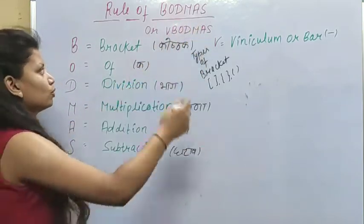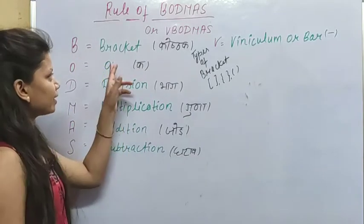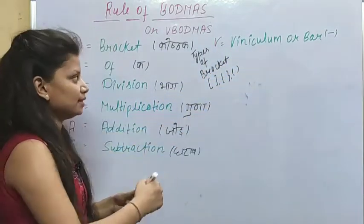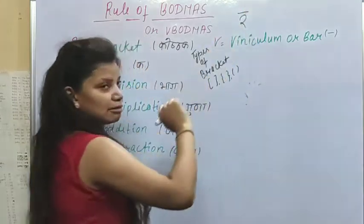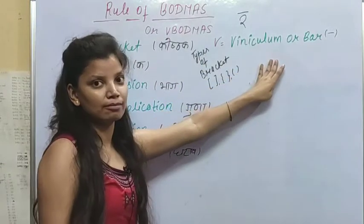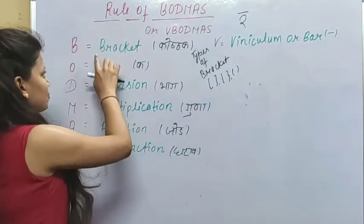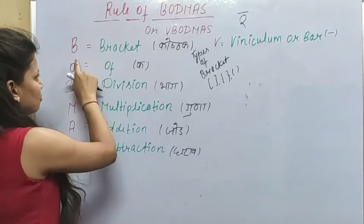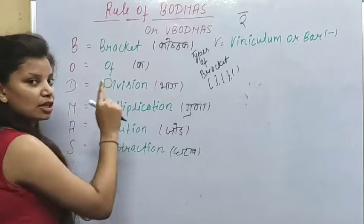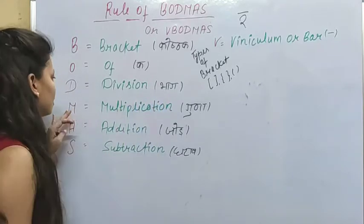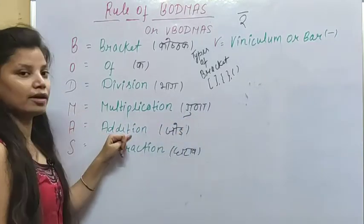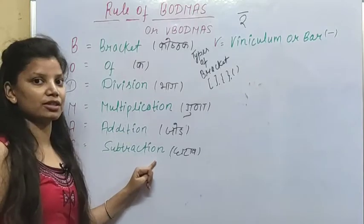The BODMAS rule — what does this mean? B stands for Bracket. Before we see this, what is vinculum — the bar? O means 'Of', which means multiplication of a fraction. D means Division. M means Multiplication. A stands for Addition.